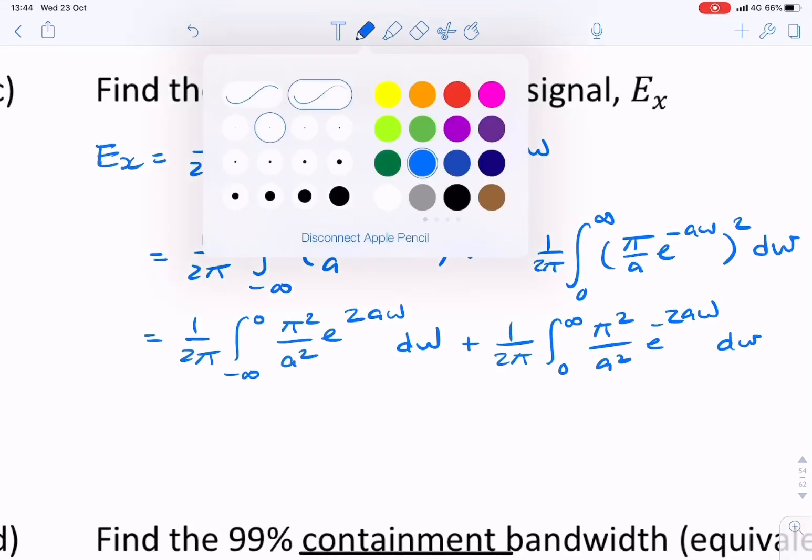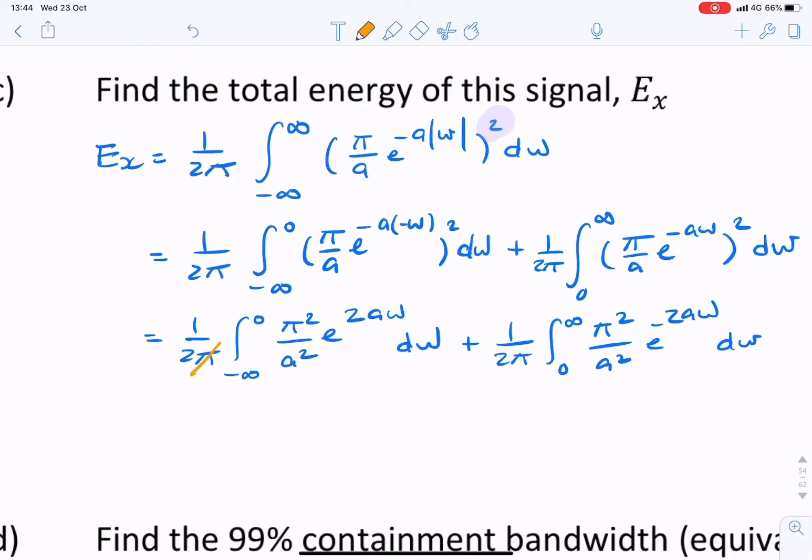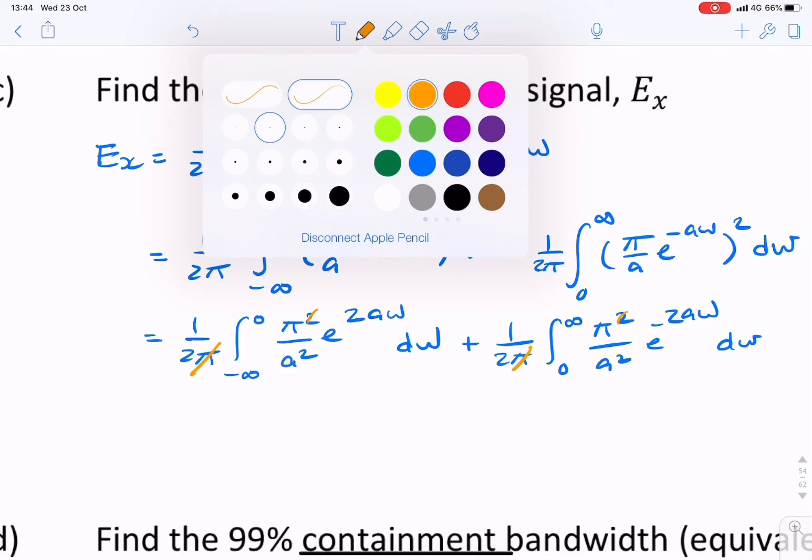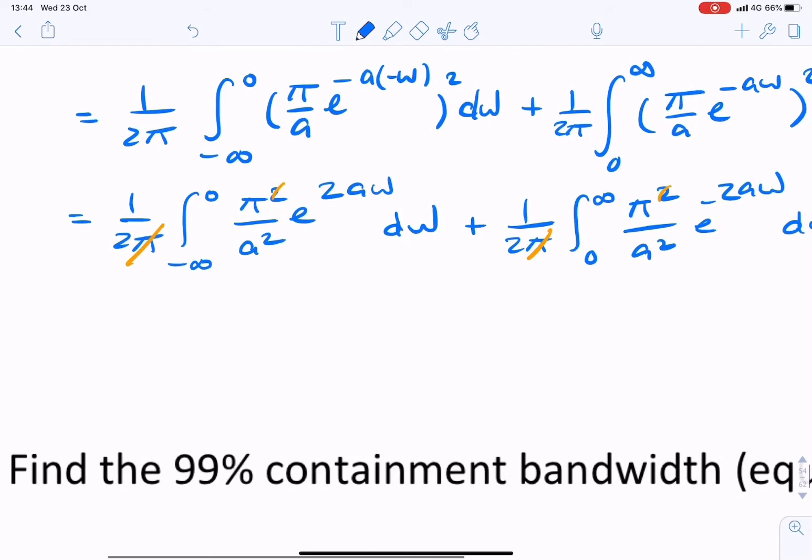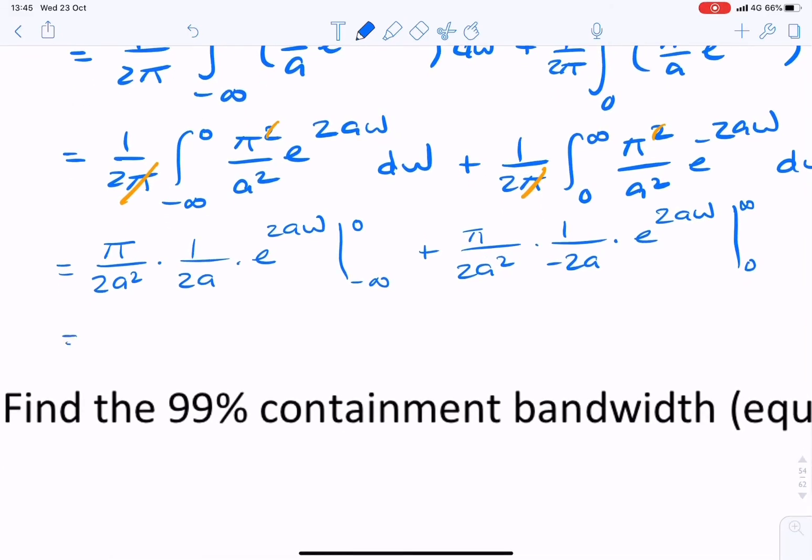Now we simply need to do the integration. Let's do that integration. Let's get the constants out of the way. So π over 2a squared, times 1 over 2a, times e to the 2aω, from minus infinity to 0, plus π over 2a squared, times 1 over minus 2a, times e to the 2aω, from 0 to infinity.